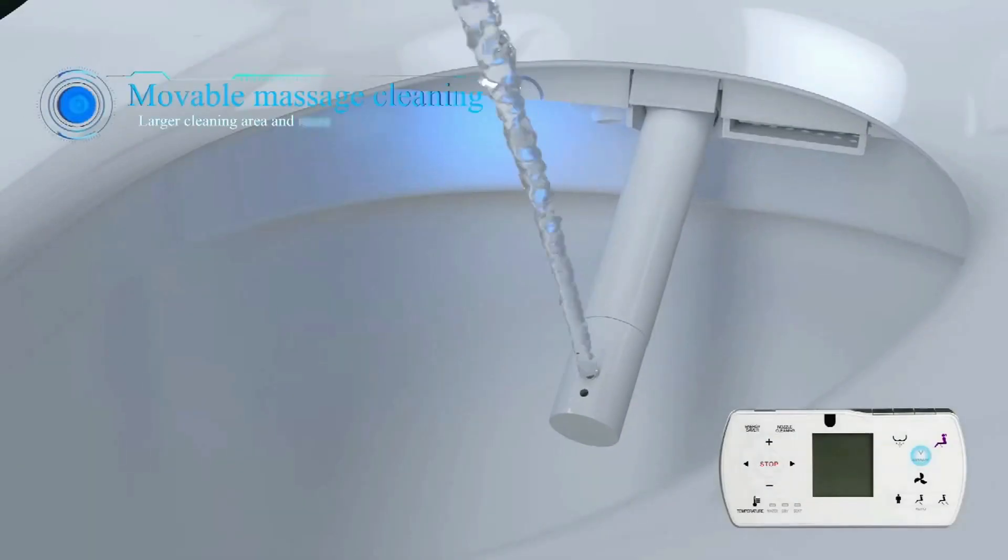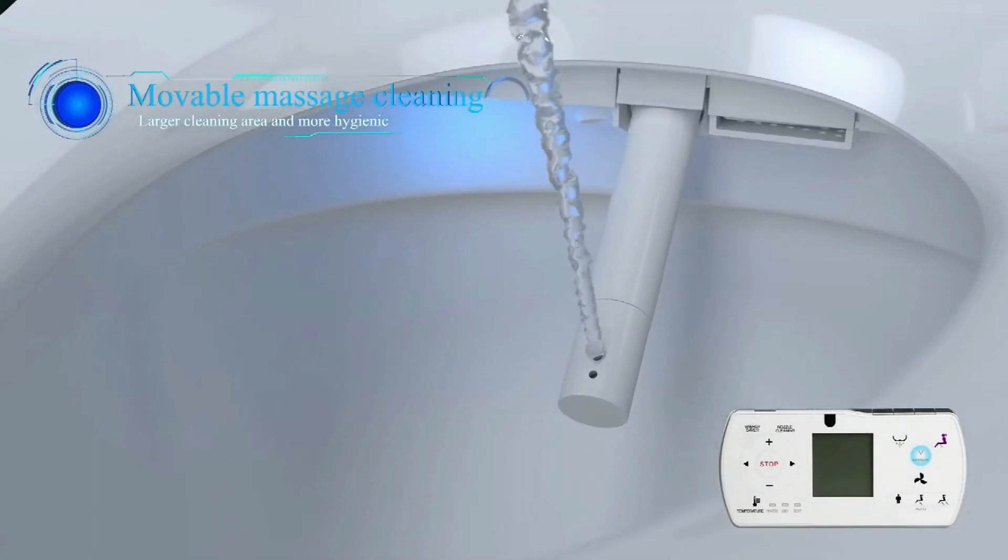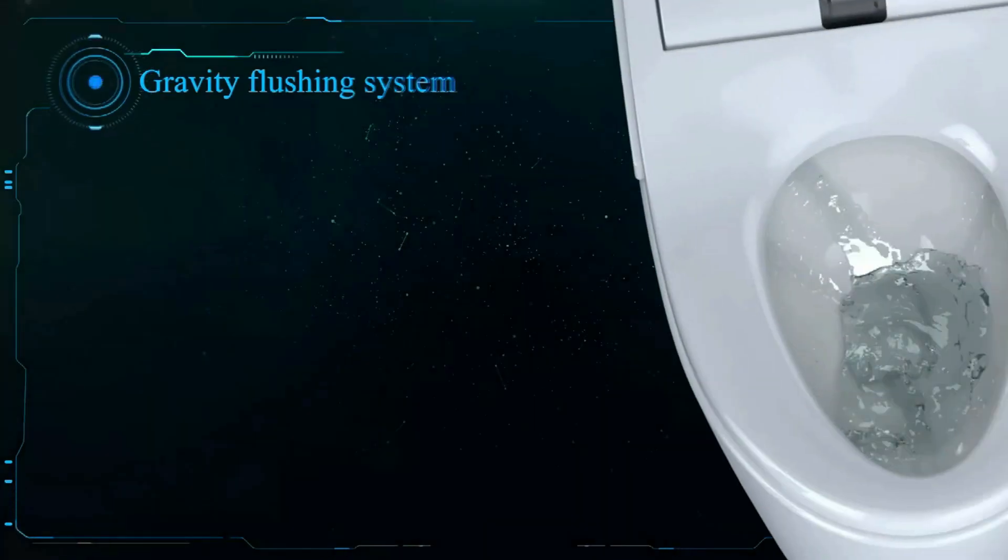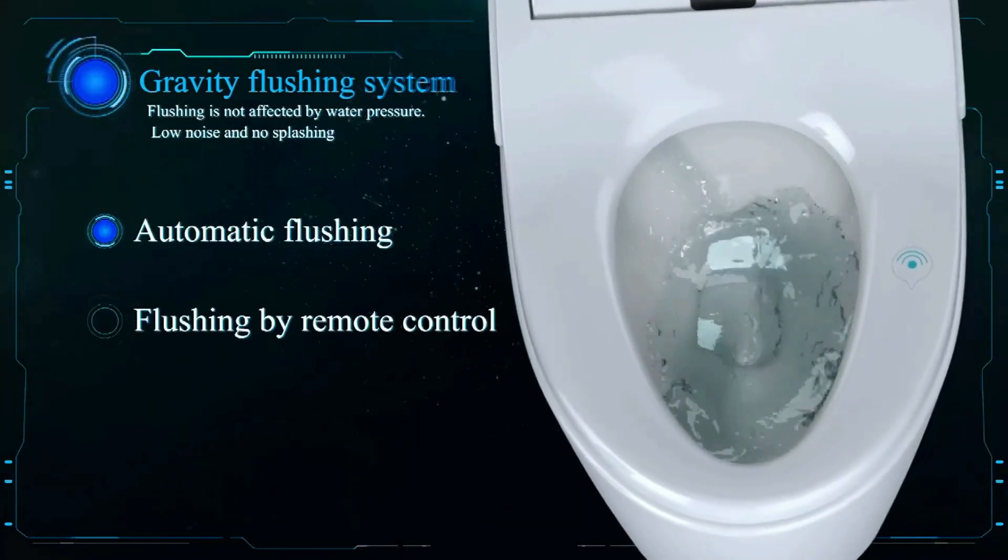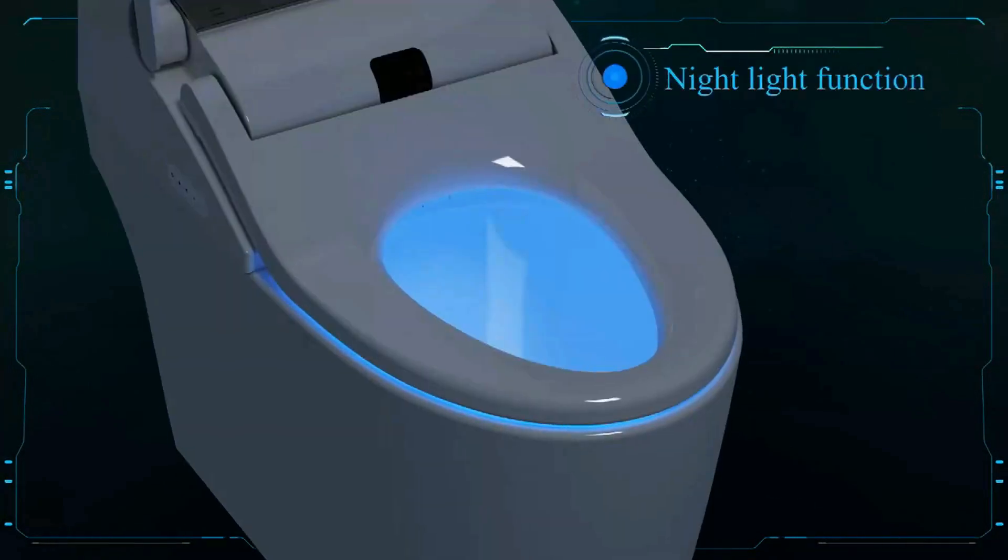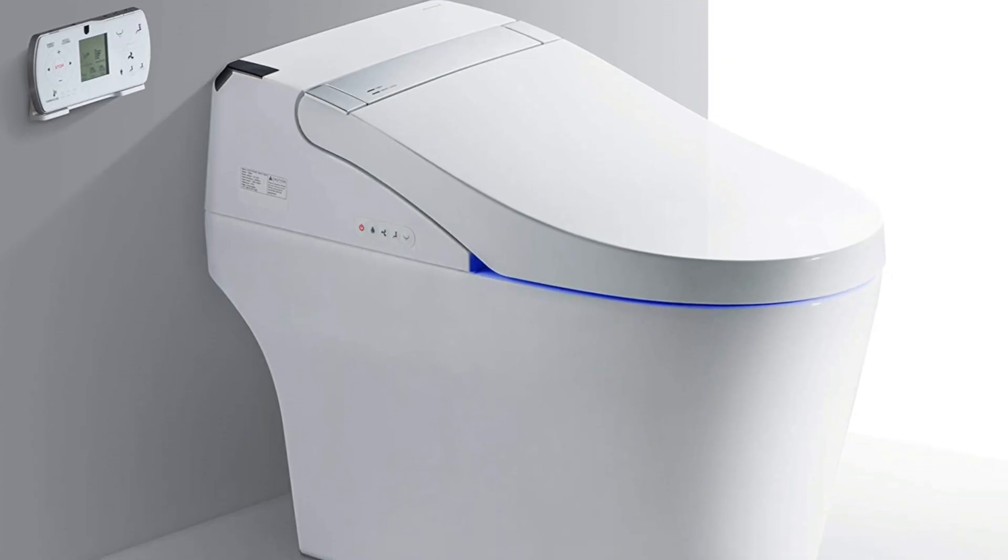The deodorizer effectively cleans the air around the toilet using powerful air filters. Air is drawn in, passing through an ionized carbon filter to eliminate unpleasant odors. The glow of the cool blue nightlight makes your favorite seat in the house all the more welcoming.